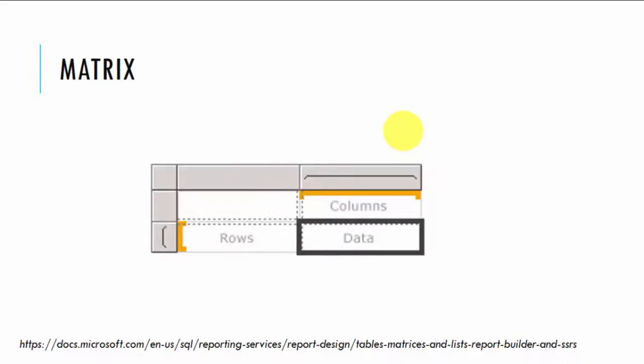The next one is a matrix report. We use a matrix report to display aggregated data in the form of summaries grouped into rows and columns. It's kind of similar to pivot tables in Excel or the cross tabs that we refer to. The number of rows and columns for groups is determined by the number of unique values in each row and column group. We'll also see some tricks and techniques for how to create a drill-down effect and how to toggle visibility between certain rows, how to expand and collapse certain groupings of data.